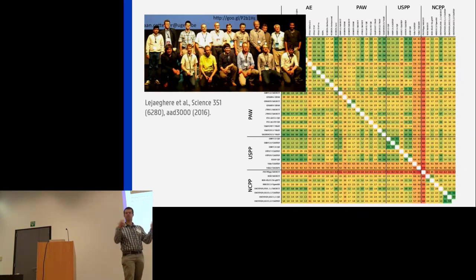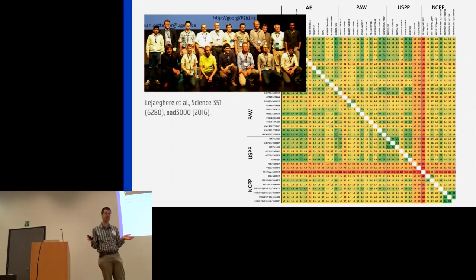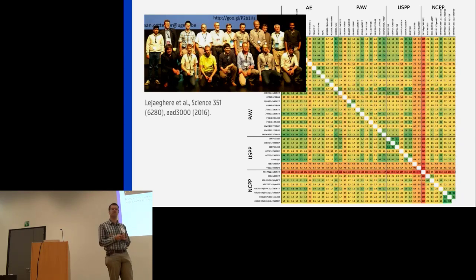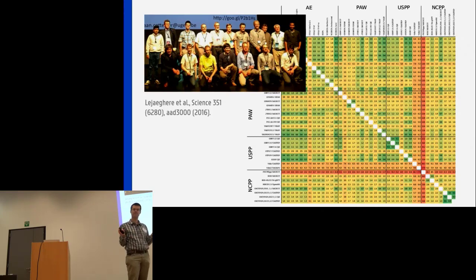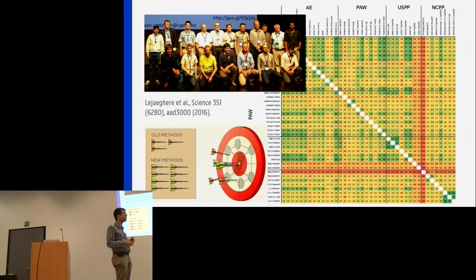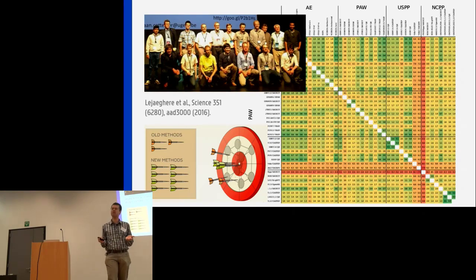We did this great comparison together with a lot of different collaborators, many of whom are already here again. In the end, we got to this final figure. I think this is the main result of the Delta paper, where we compared about 40 different methods, and this matrix showed in terms of Delta how these different methods compared. The main conclusion was we're actually doing quite okay — if we're using recent methods, their agreement is very good.